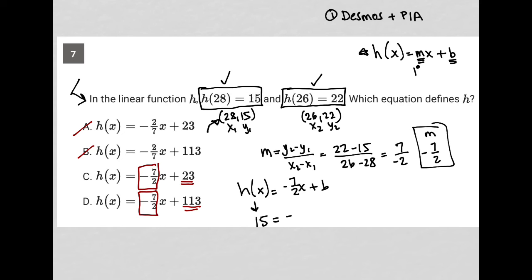I can also replace x with 28, and I'm just getting that from this ordered pair here. And then I'd have plus b. So I'd have an equation here with a single unknown. So I know that I can figure out the value of b.